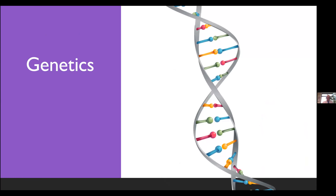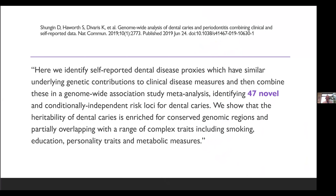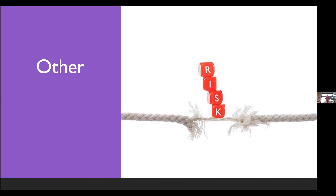The most recent genetics study was a meta-genome-wide analysis of dental caries and periodontitis. They found 47 novel and conditionally independent risk loci for dental caries, confirming that certain genes influence caries risk. Interestingly, they demonstrated that the heritability of dental caries is enriched for conserved genomic regions and partially overlaps with smoking, education, personality traits, and metabolic measures. So dental caries genes may overlap with other behaviors and personality traits that are also genetic.